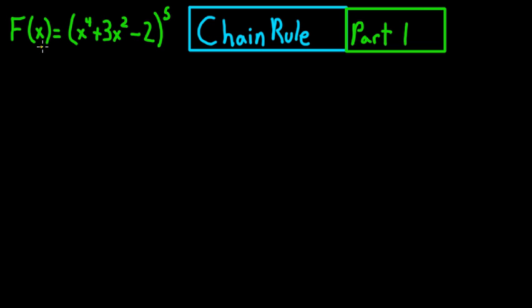Basically we've got f of x here equals x to the fourth plus 3x squared minus 2 all to the fifth power. Now the first part that you need to do with the chain rule is find the derivative of this part right here.